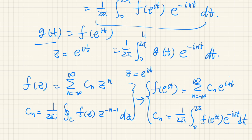So we can see the Fourier series is a special case of the Laurent series when this path can be taken as the unit circle around the origin.